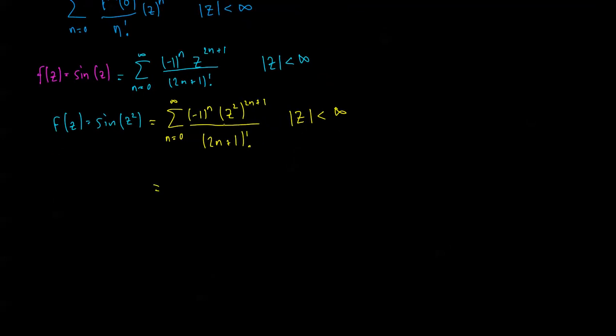So just expanding that out, we want to get rid of the z squared. I'm going to get n equals 0 to infinity, negative 1 to the n, z to the 4n plus 2, on 2n plus 1 factorial, and that's valid for mod z less than infinity.